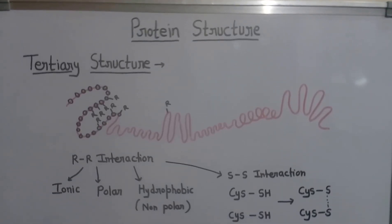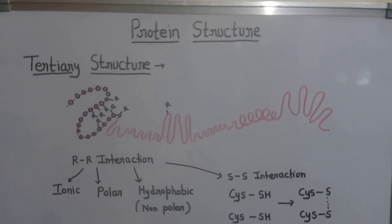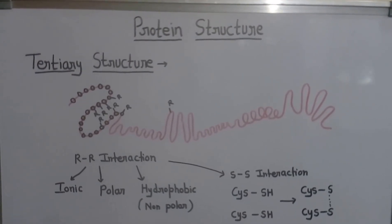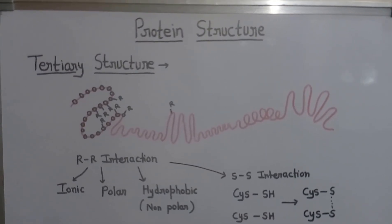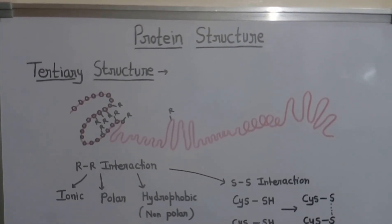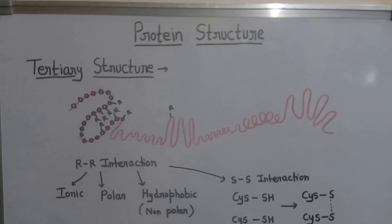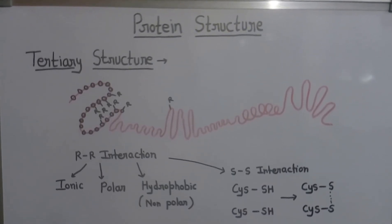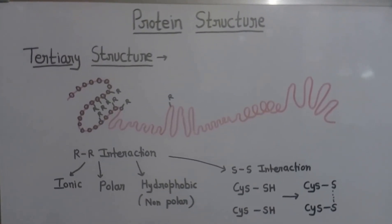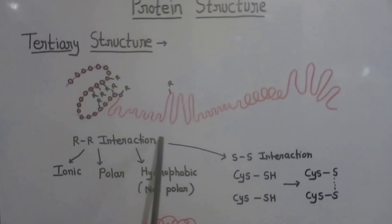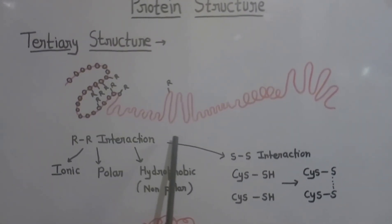Hello friends. In our earlier class we have studied the primary and the secondary structure of protein. Now we will consider the tertiary and the quaternary structure of protein. As we know, in the secondary structure of protein there is localized folding of the polypeptide chain. This folding may be of beta pleated type or of the alpha helical type. You may see there is a polypeptide chain and this is the secondary folding of the polypeptide chain.